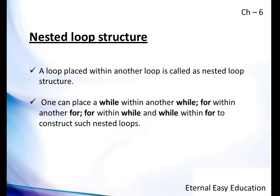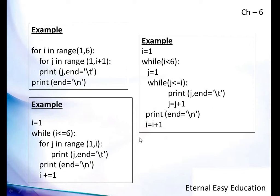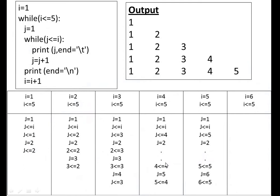Just like nested if — if within an if is called nested if — a loop within a loop is called a nested loop. Here I have given examples: a for within another for, a while within a for, a for within a while, and a while within a while. The outer thing is said to be the outer loop and the inner thing is said to be the inner loop.